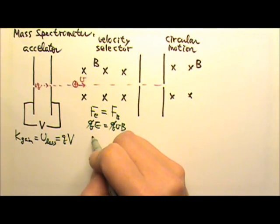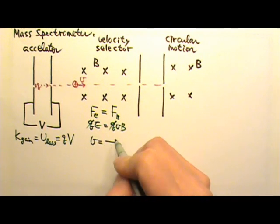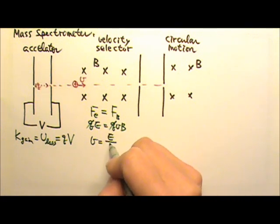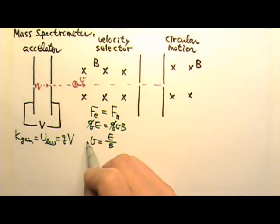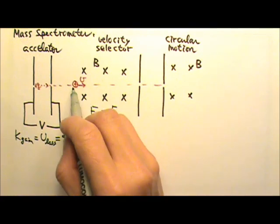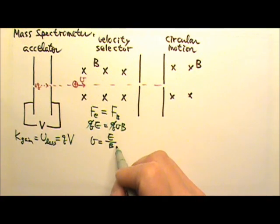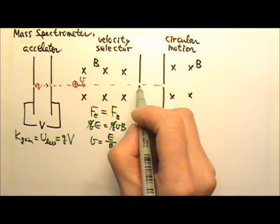So the charge would cancel. That means the speed of the particle must be E over B. Only particles with velocity that's this value would go straight. If not, they would deflect and would not go through.